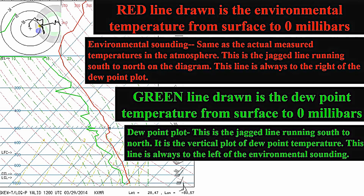Now, let's go over the different components of the graph. The red line is the environmental temperature charted from the surface to approximately 0 millibars. The environmental sounding, also known as the air temperature, is basically what the temperature is as we go through the atmosphere. This line will run south to north, with the surface being at the bottom. You will always notice that the red line is to the right of the green line, because temperature is always greater than or equal to the dew point.